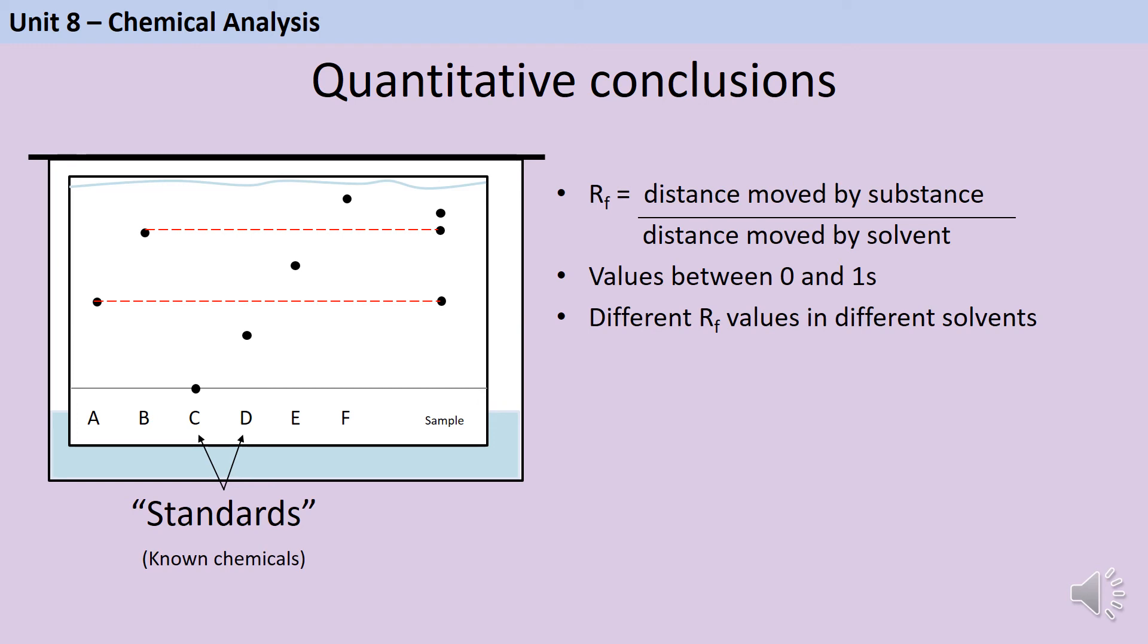So when you calculate RF values they must be between 0 and 1. This sort of represents 0% to 100%. You can't have something that's gone further than 100%. And we would expect that different substances would have different RF values if you do a chromatogram with a different solvent.